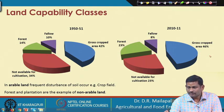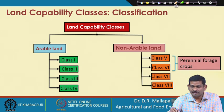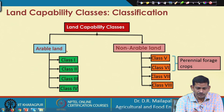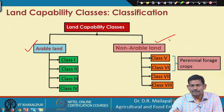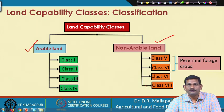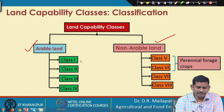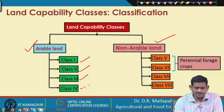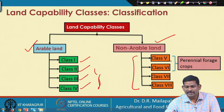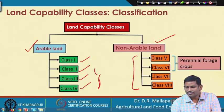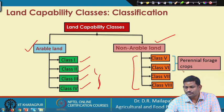Land capability classification is divided into two groups: arable land and non-arable land. Arable land — land used for cultivation — includes classes 1, 2, 3, and 4. Non-arable land includes classes 5, 6, 7, and 8. Classes 5 and 6 are used for perennial forest crops, though they are non-arable land.